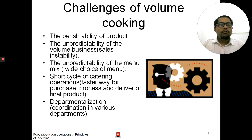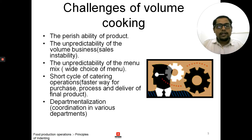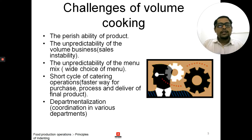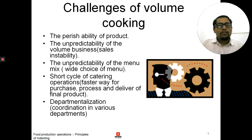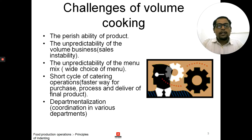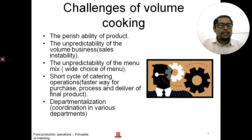Next are the challenges of volume cooking. The first is the perishability of product — food products get perished and ruined easily, so this is a challenge. The fresher the food you process and cook, the tastier it is, instead of preparing it a day or two before the event. The second is the unpredictability of volume business — that is, sales instability. You have no idea how many guests would be coming. If a guest says they are hosting a party for 300 people but only 200 come, the food for 100 people gets wasted.